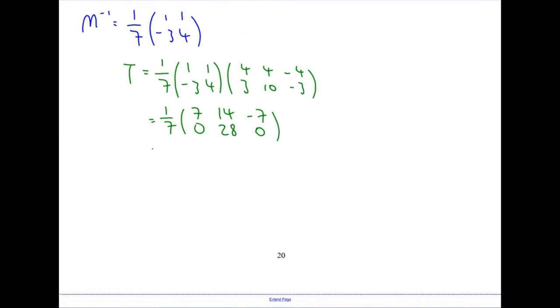Then you get minus 3 times 4, so minus 12 plus 40, which is 28. And then second row times the last column gives us 12 minus 12, again gives us another 0. Now I can divide all of these by 7, and so finally I get 1, 2 minus 1, 0, 4, 0.